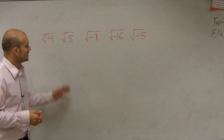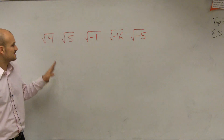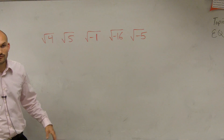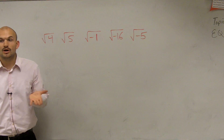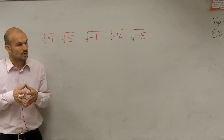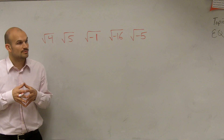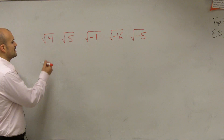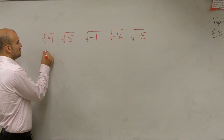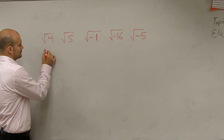Let's do our first example: the square root of four. It was plus or minus two. So the square root of four we can say is plus or minus two.